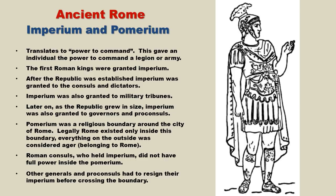Imperium was usually assigned to a specific region. For instance, let's say you were a proconsul assigned the province of Spain and given a term of three years. You would be granted Imperium for Spain only. Now let's say you decided to take a trip from Spain to Gaul. You would lose your Imperium once you entered Gaul, and you would have no right to issue orders to any legions inside Gaul.